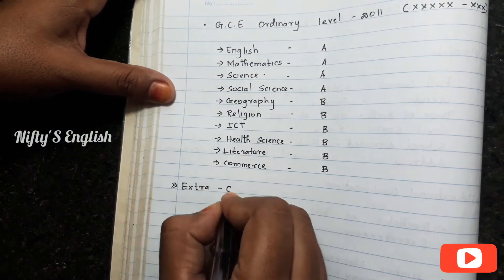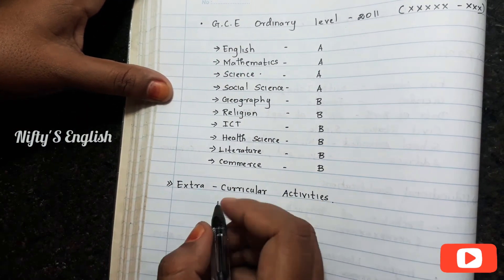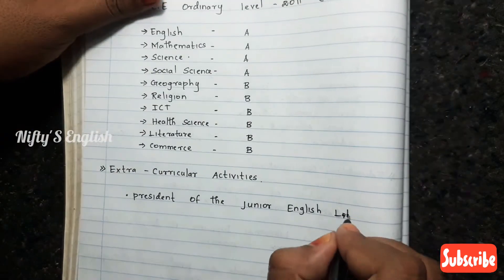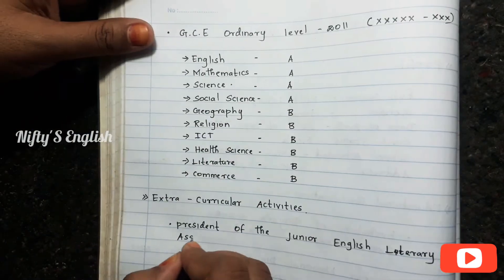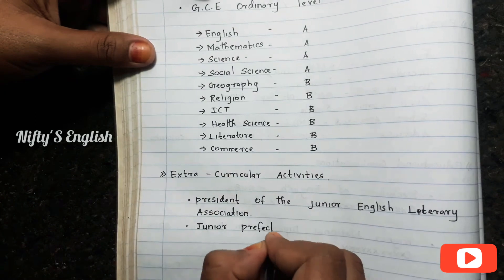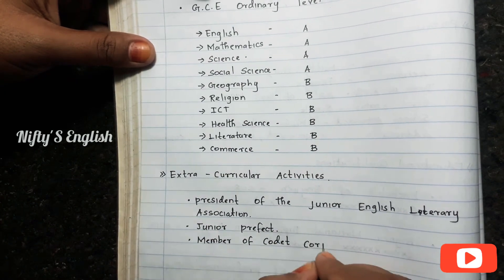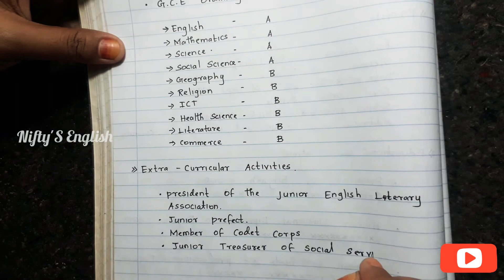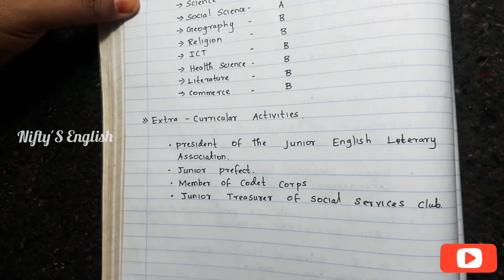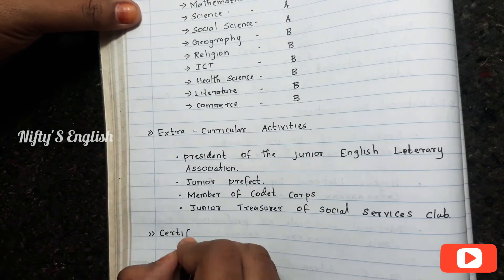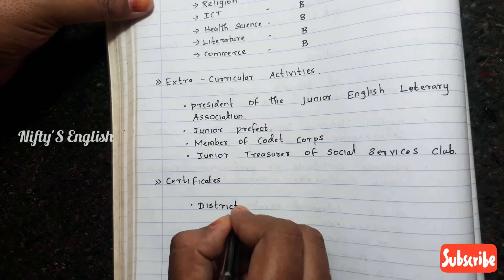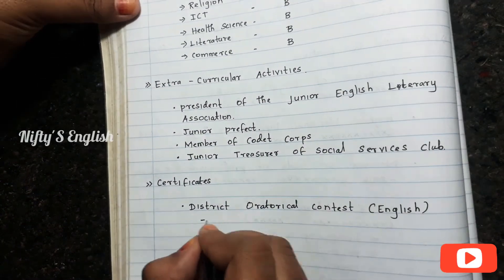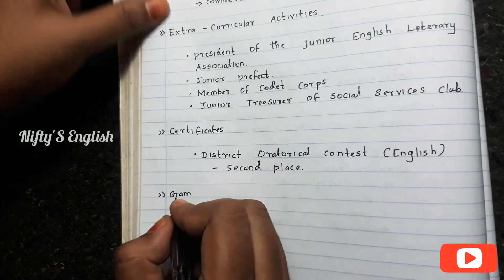After that, the extracurricular activities: first, President of the Junior English Literary Association; second, Junior Prefect; third, Member of Cadet Corps; and fourth, Junior Treasurer of the Social Service Club.